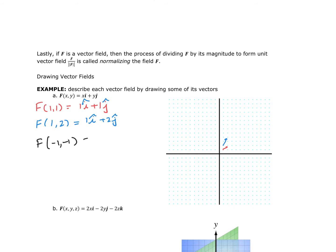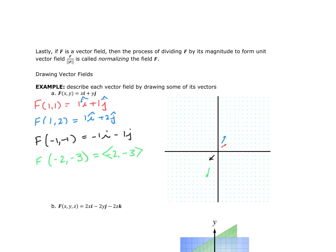We continue drawing the vector field by choosing additional points, such as (-2,-3), giving the vector (-2,-3). This process is a little tedious by hand. I would recommend using a graphing utility — the one we use in class for three-dimensional graphing actually does vector fields in both 2D and 3D, and we'll talk about that in class when we cover this section.